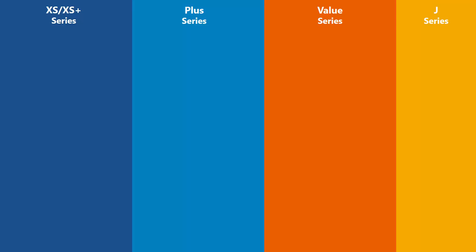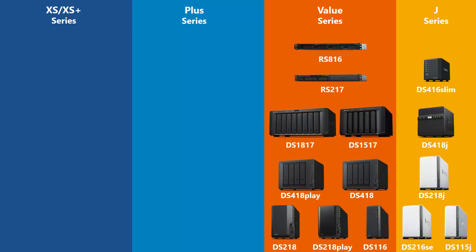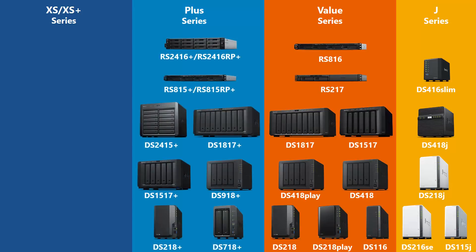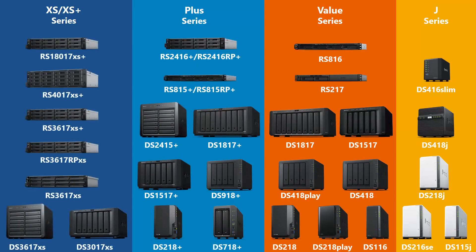As you can see, we have four main product series that we split up based on their performance level. We have the J series, the value series, the plus series, and the XS and XS plus series. The J and value series are our more consumer-focused units — they are not going to have a very high storage capacity or performance level, as they are meant for home use. If you're looking for a business application, that is where you'd want to look at the plus and the XS and XS plus series, as those are the business-focused units that Synology offers.